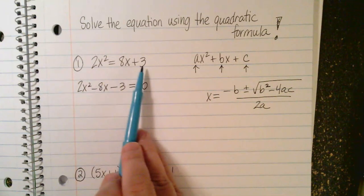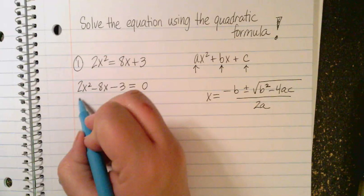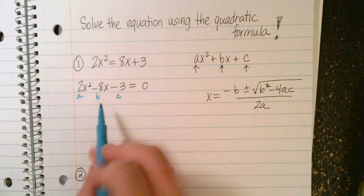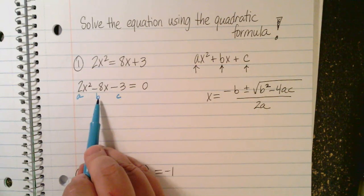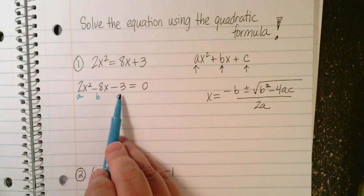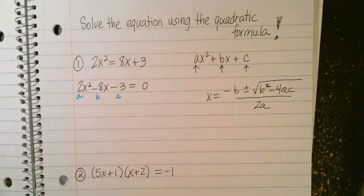So now the beauty of this is that I can identify my A, my B, and my C. You can't identify those until it's in standard form. I can't just look up here and say, I know what A, B, and C are. Here is A. Here is B. Here is C. Notice that B is negative 8. It takes the sign that's in front of it. C is negative 3. A is just positive 2. So now I'm ready to plug in.